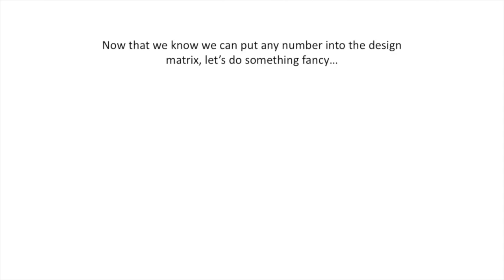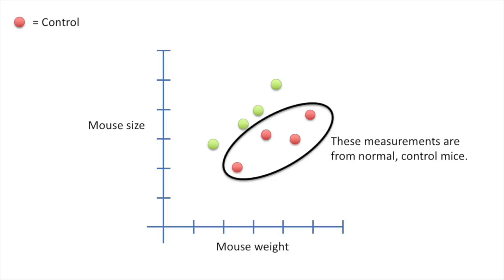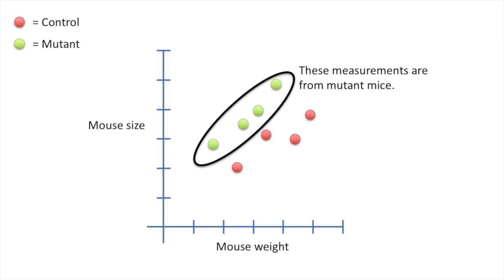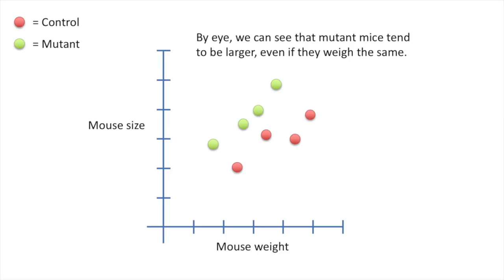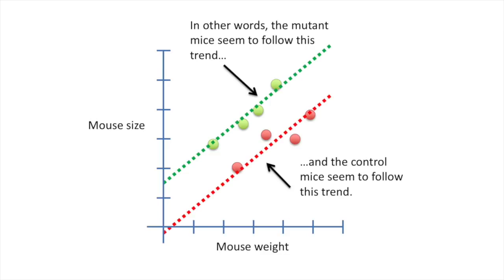Now that we know we can put any number into the design matrix, let's do something fancy: combine a t-test and a regression. We're back to the relationship between mouse weight and mouse size, but now we have two types of mice. These measurements are from normal control mice, and these are from mutant mice that make them tall and skinny. We can see that mutant mice tend to be larger even if they weigh the same — the mutant mice seem to follow one trend and the control mice another.